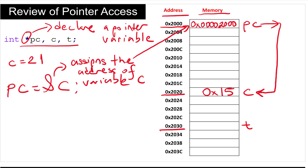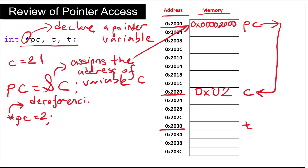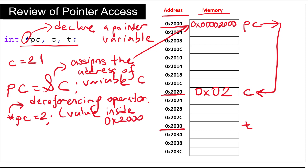Now we can use our pointer to access memory location hex 2020. If I write star PC equal to 2, this means the content of variable C is now changed to 2. So decimal 2, or hex value of 2, is written to this location. This star is different from the pointer declaration — this is called the dereferencing operator. It simply refers to the contents of the pointed location, referring to the value inside the pointed address, which in this case is hex 2020.